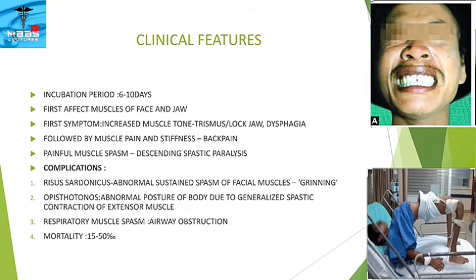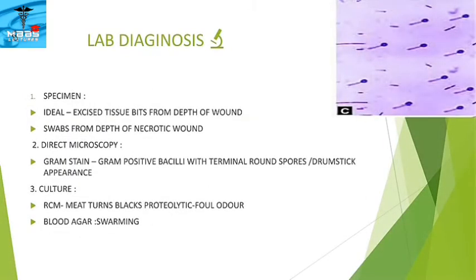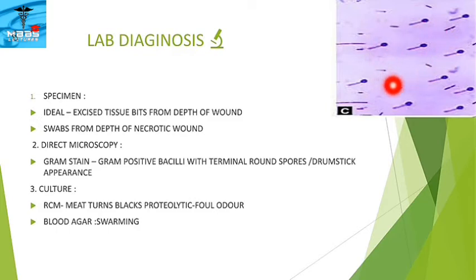Tetanus has a mortality rate of 15 to 50%. For lab diagnosis, specimens collected include necrotic tissue bits from the depth of the wound, which is the ideal specimen, as well as swabs from the depth of the necrotic wound. On direct microscopy with Gram stain, we see Gram-positive bacilli with terminal round spores giving a drumstick appearance.